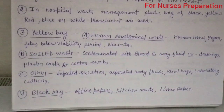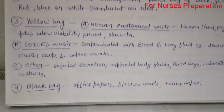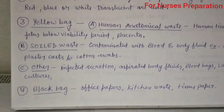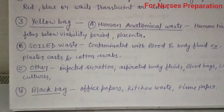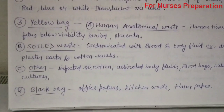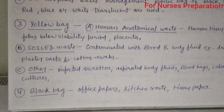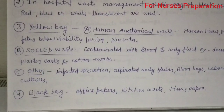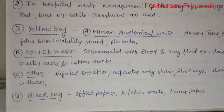Point number four: the black color bag. In this bag we collect office papers, kitchen waste, and tissue paper.